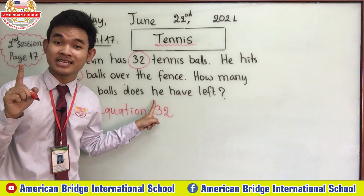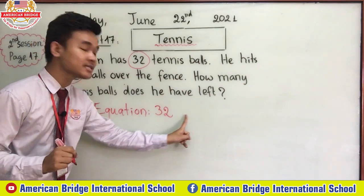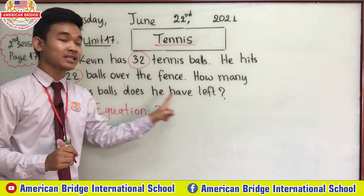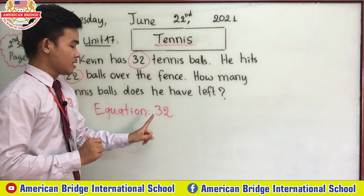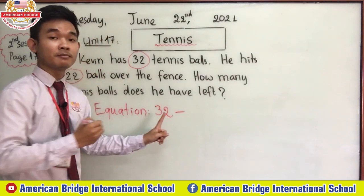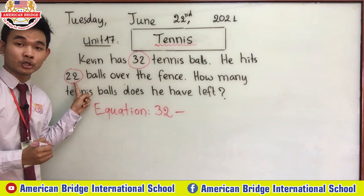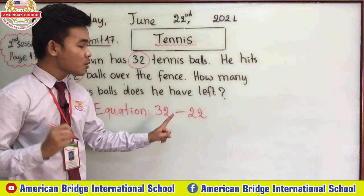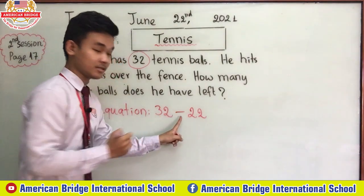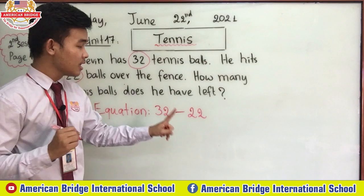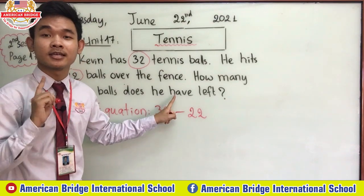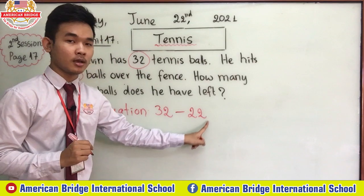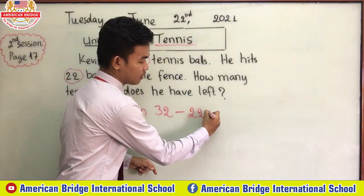We do subtraction — we minus, we take away — because we want to know how many balls are left. So we have 32 tennis balls minus 22 tennis balls. We do the subtraction or minus because we want to see how many are left. Please remember that. So: 32 tennis balls minus 22 tennis balls equals...